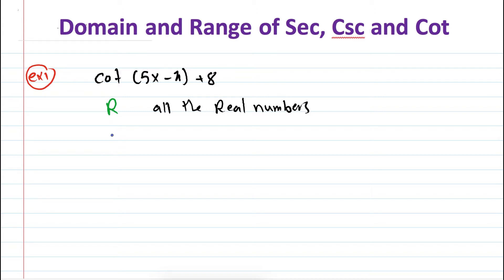How about the domain? The domain is all the real numbers except those values where we have vertical asymptotes. So where do we have vertical asymptotes? For cotangent, we have vertical asymptotes at π plus or minus nπ.